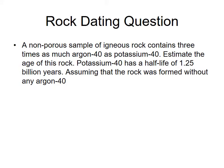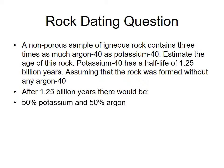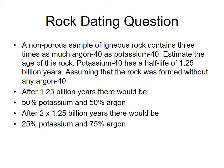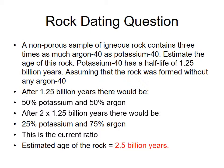A non-porous sample of igneous rock contains three times as much argon-40 as potassium-40. Estimate the age of the rock given that potassium-40 has a half-life of 1.25 billion years, assuming the rock was formed without any argon-40. After 1.25 billion years there would be a 50-50 ratio of potassium-40 to argon-40. After two half-lives — two times 1.25 billion years — there would be 25% potassium to 75% argon, which is the three-to-one ratio we see in the rock. Therefore the age should be 2.5 billion years, or two half-lives.